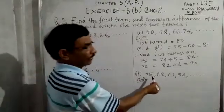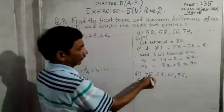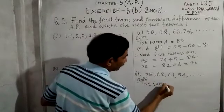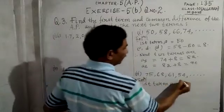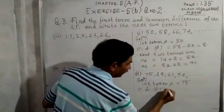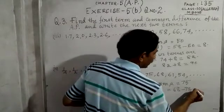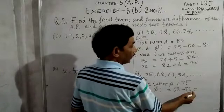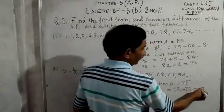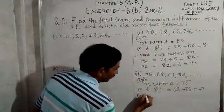Next, question 3 sub-number 2. The AP is 75, 68, 61, 54... First term A is equal to 75. Common difference D equals the second term 68 minus the first term 75. Since the bigger number is subtracted, 68 minus 75 gives minus 7. So D equals minus 7.